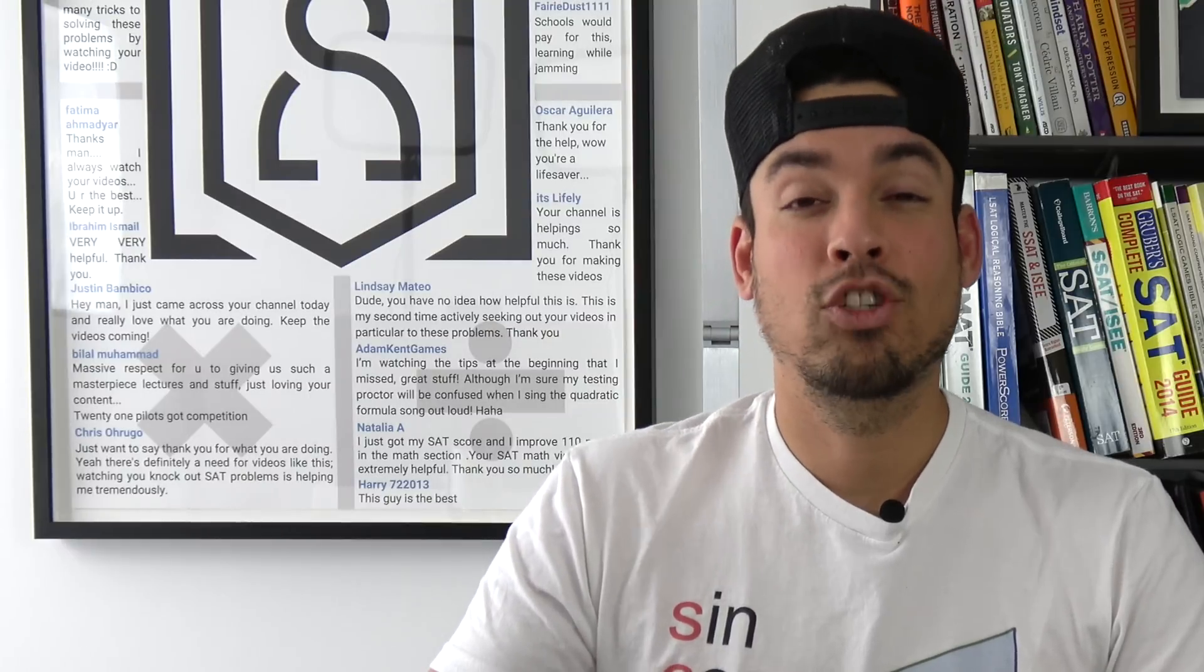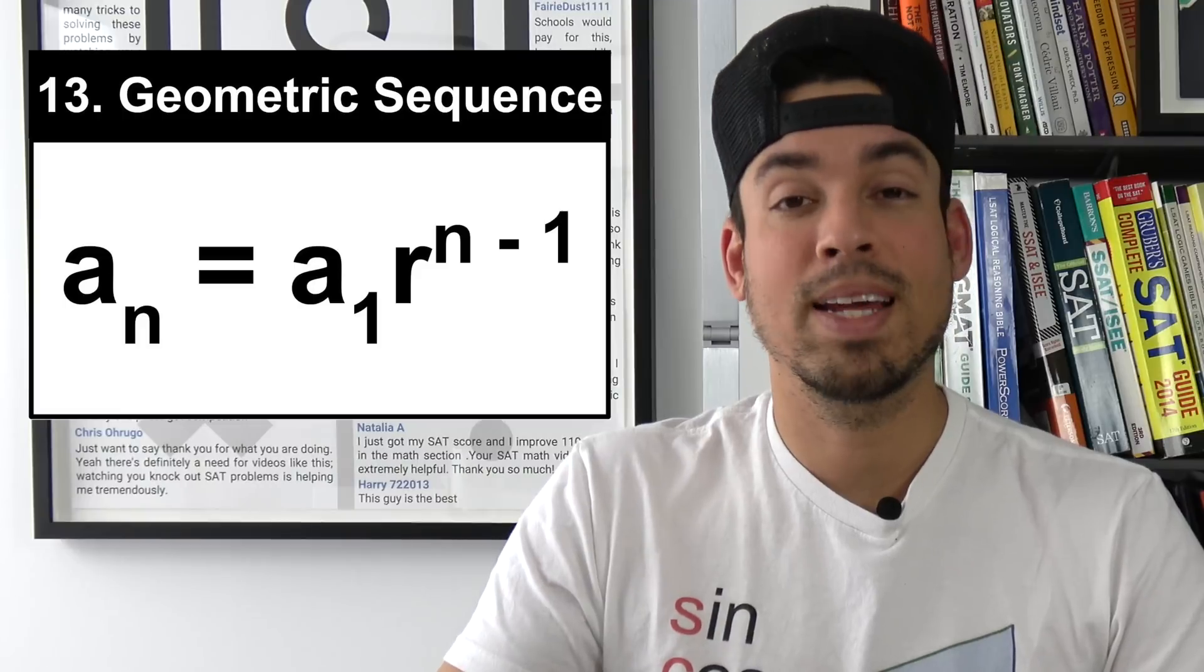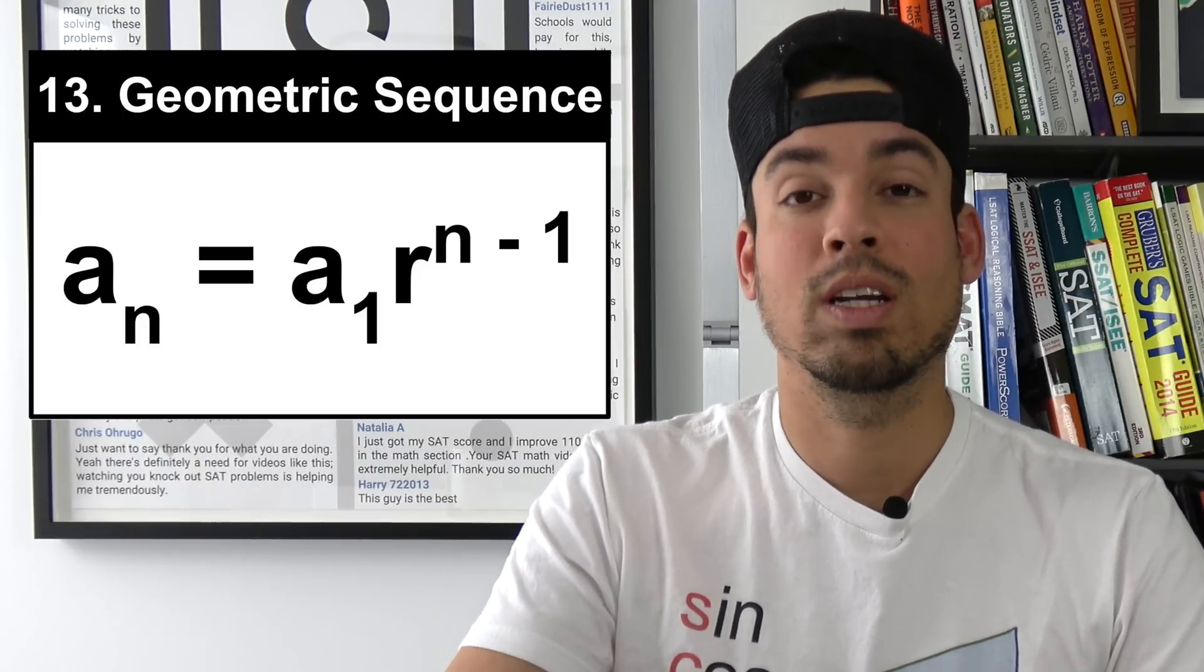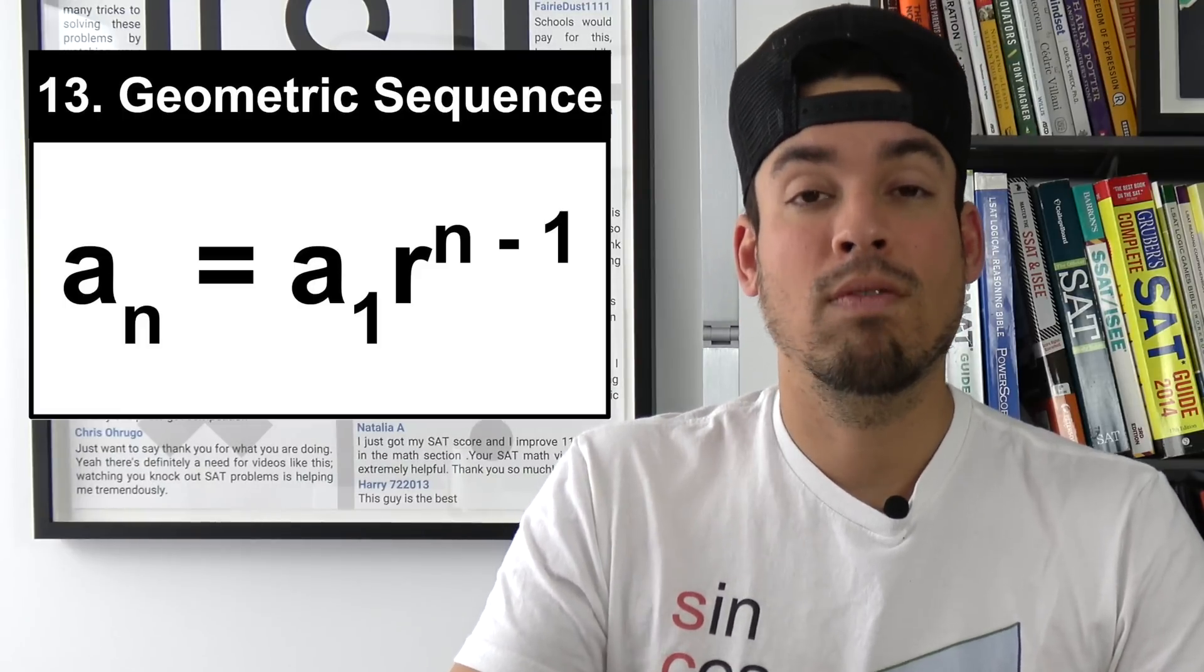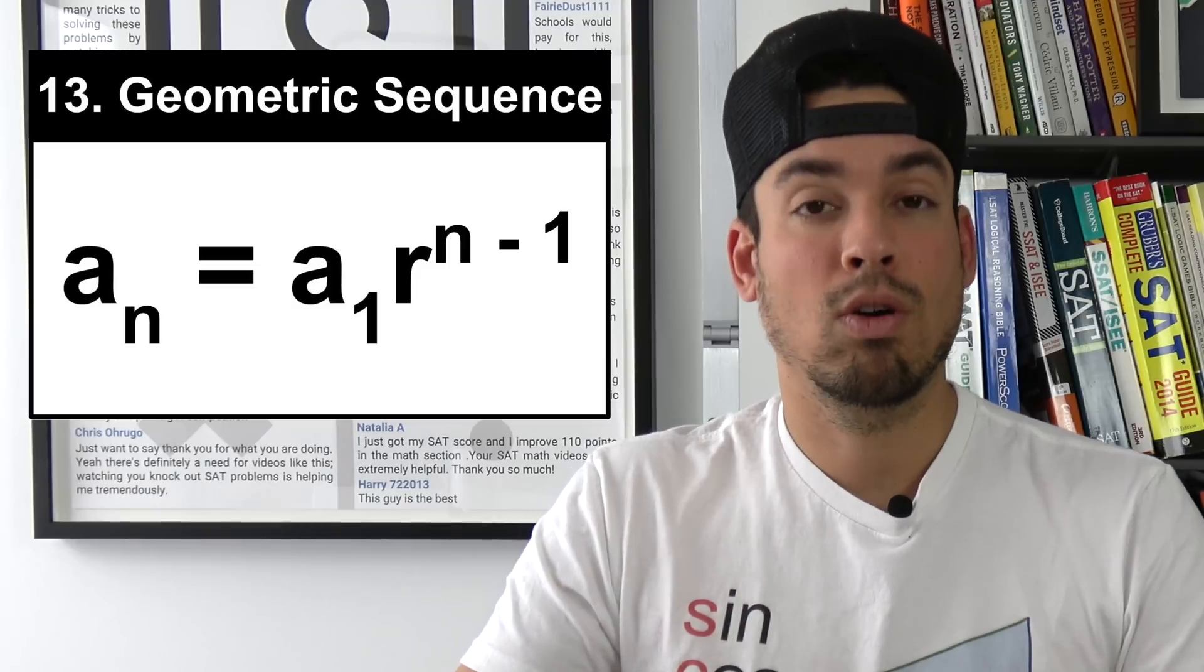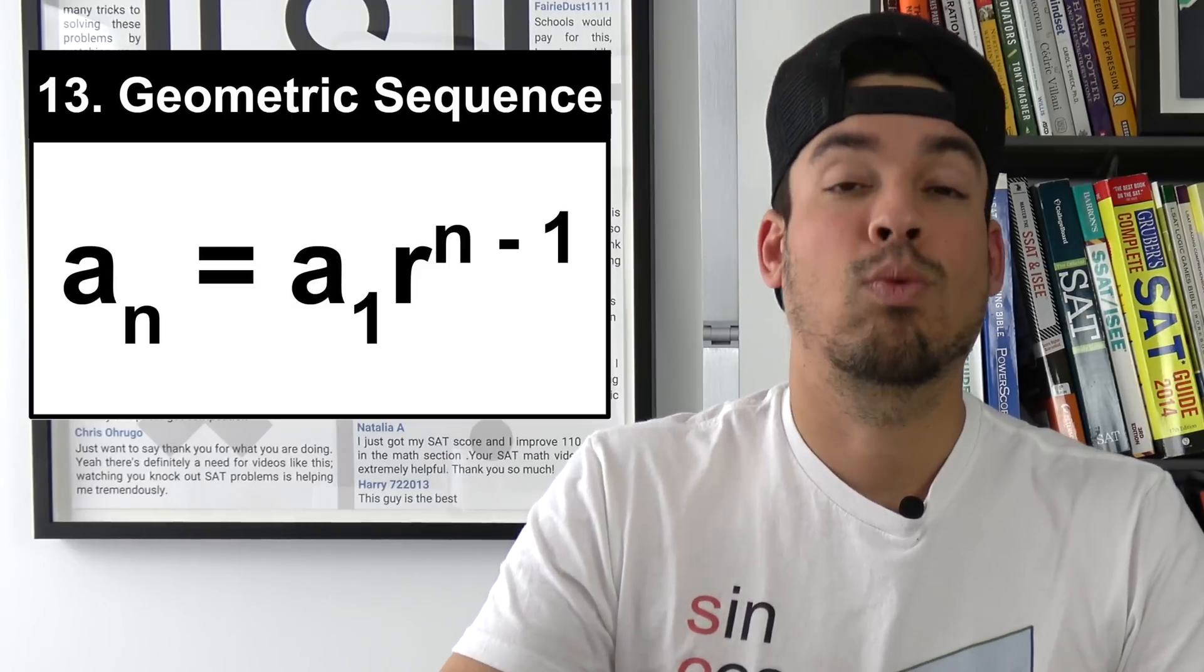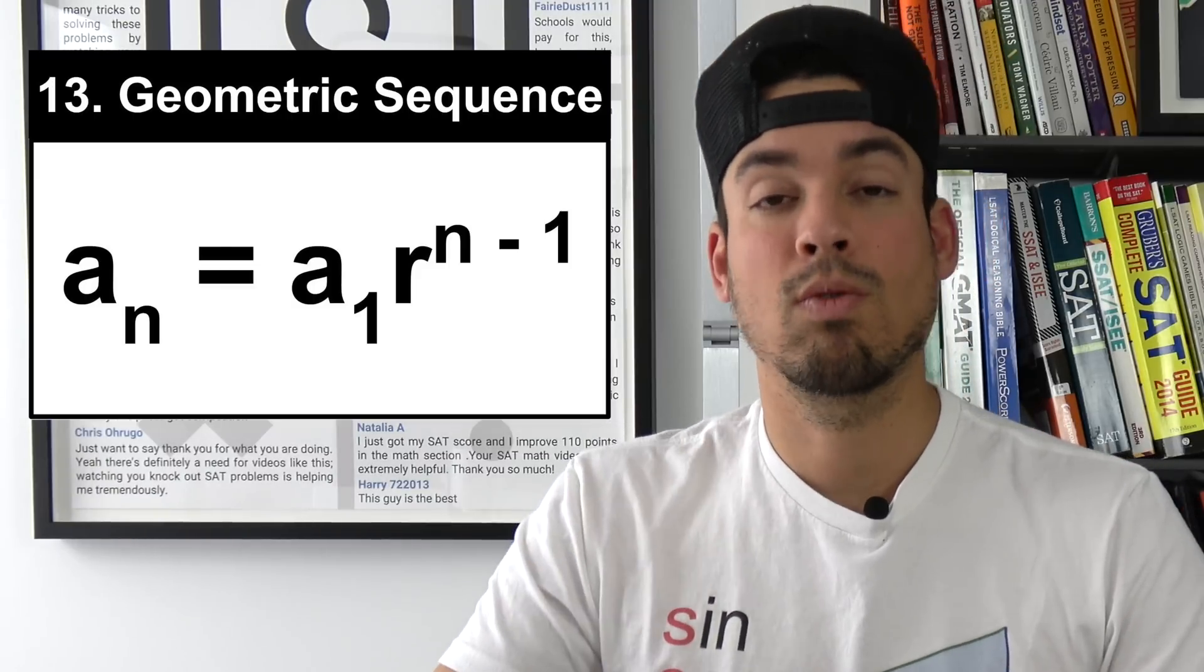Next we've got the formula for a geometric sequence. Unlike an arithmetic sequence a geometric sequence progresses by a multiplier. So for example if you have a multiplier of 3 it would go 3, 9, 27, 81 and so on and so forth.